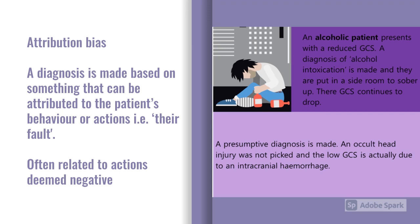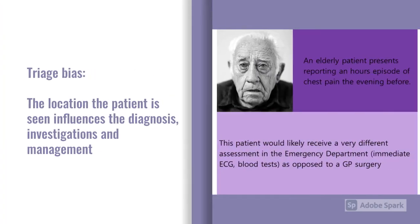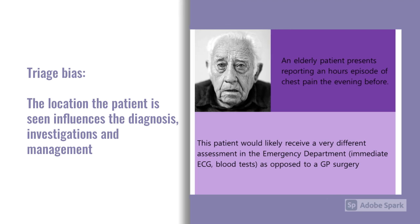The last form of cognitive bias is triage bias, where the location in which you see the patient influences the diagnosis, investigations, and management. For example, somebody presenting to a GP surgery with chest pain is managed very differently to somebody presenting to an emergency department with chest pain — where before you've even finished saying 'I have chest pain,' you're pinned down and an ECG is taken.